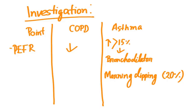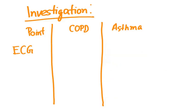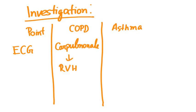Morning dipping refers to the diurnal variation in asthma: if in the early morning the peak expiratory flow rate falls by 20%, this phenomenon is called morning dipping and is a characteristic of uncontrolled severe bronchial asthma. After six minutes of exercise, there will be a 15% decrease in peak expiratory flow rate — these are diagnostic criteria of asthma. On ECG, in COPD if cor pulmonale is present it will show features of right ventricular hypertrophy, but in asthma the ECG would be normal.